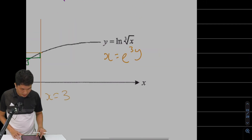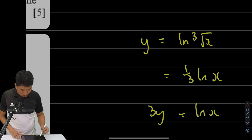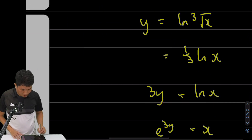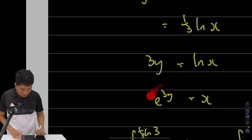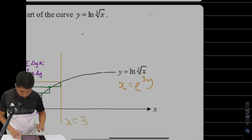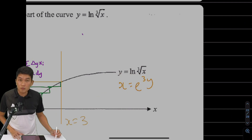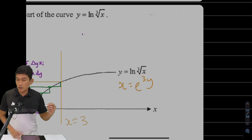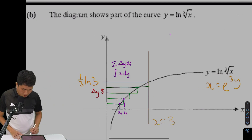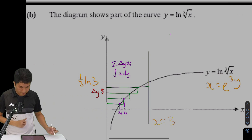If y equals natural log of cube root of x, I can move the one-third out, multiply by 3 on both sides, and take e on both sides. That gives me x equals e to the 3y. Next, when I substitute x equals 3 into the original equation, I get natural log of cube root of 3. Moving the cube root sign to the front gives one-third natural log 3. So I'm going to integrate from y equals 0 to y equals one-third natural log 3 of x dy.